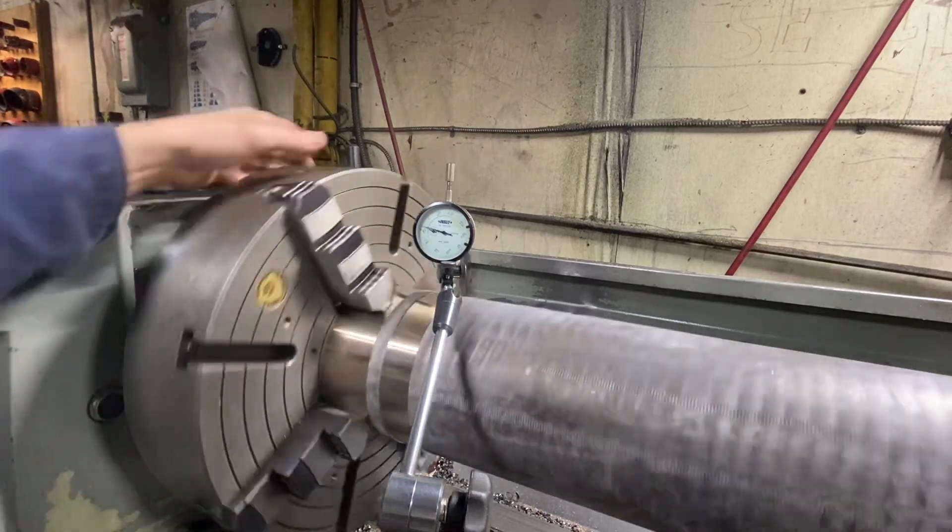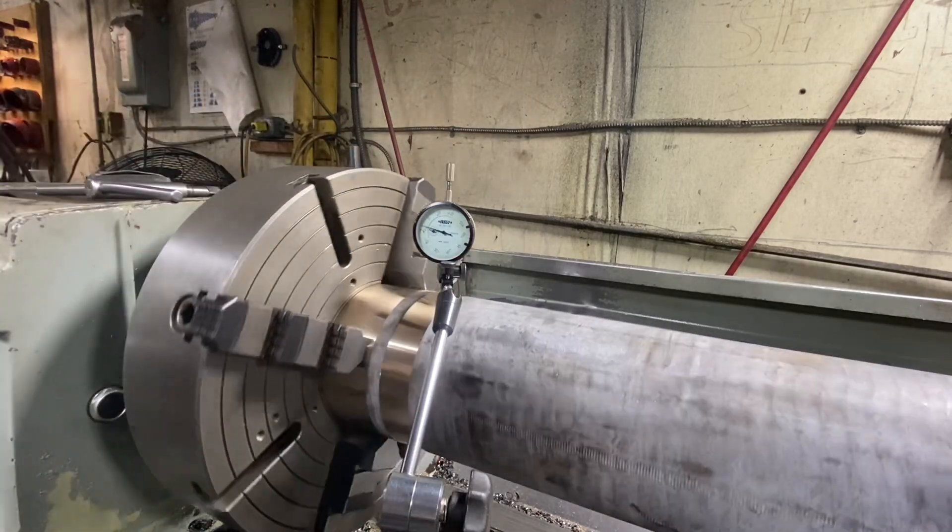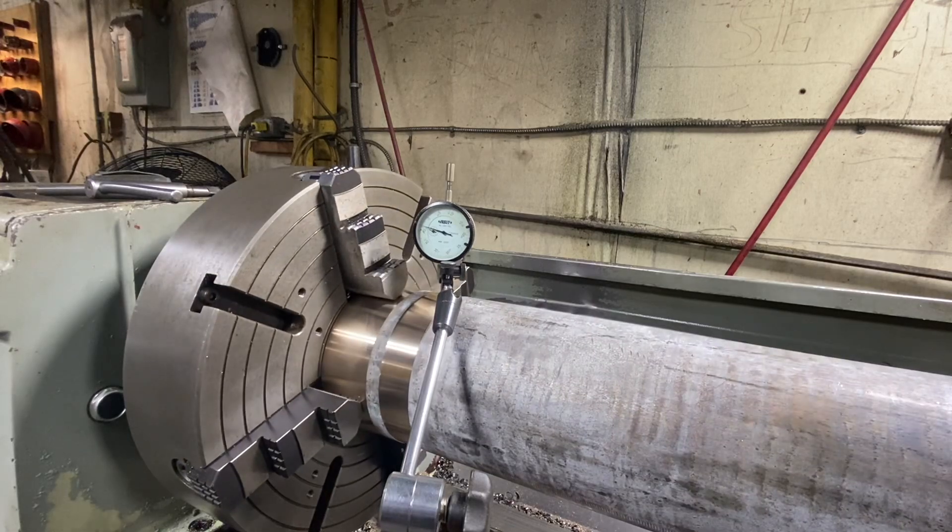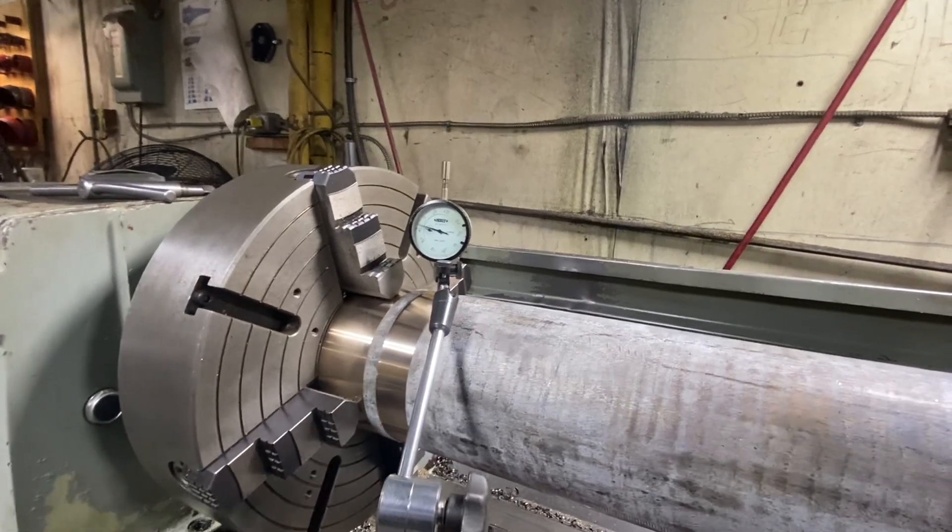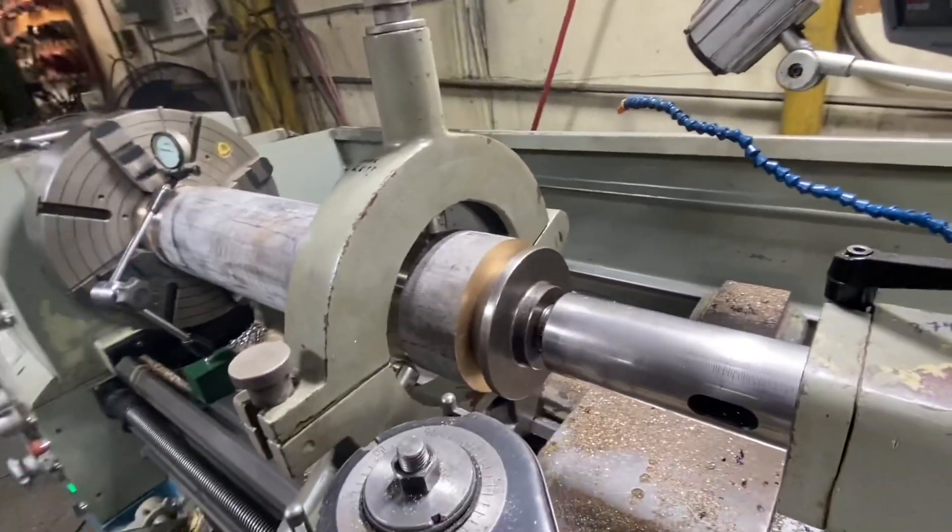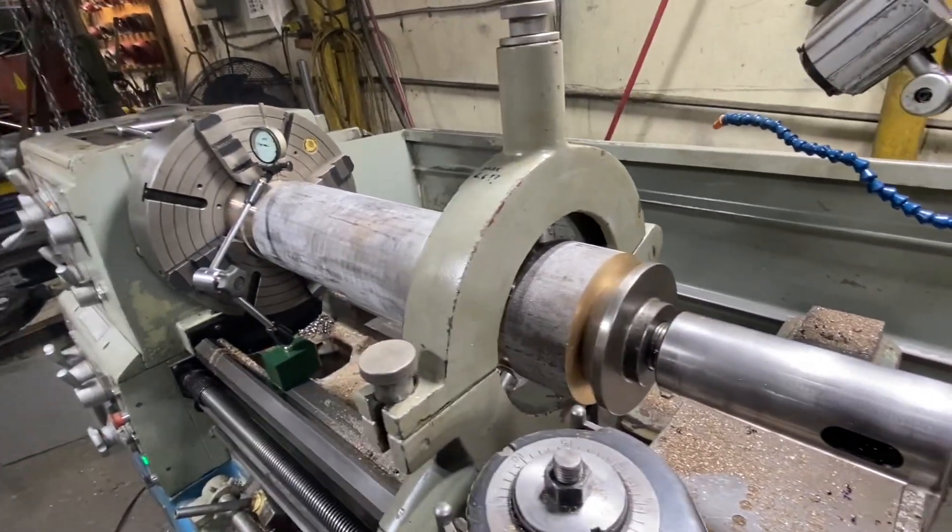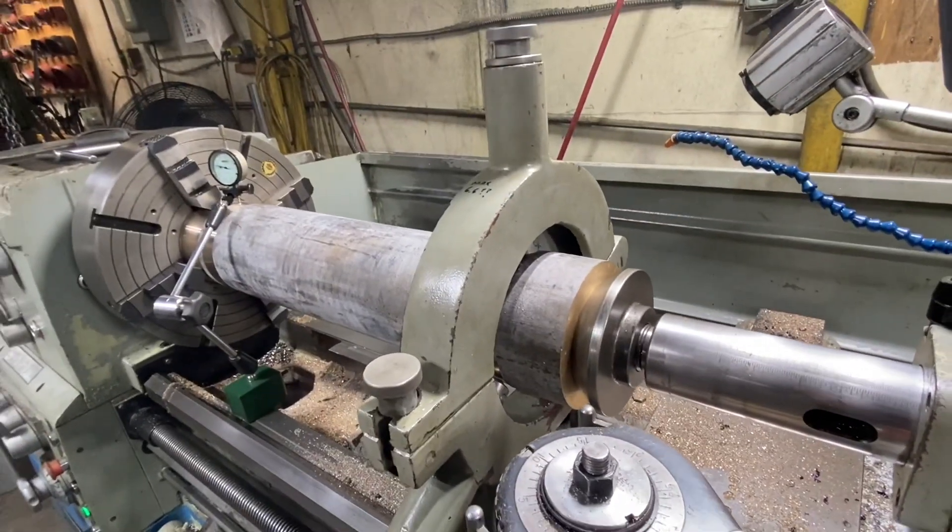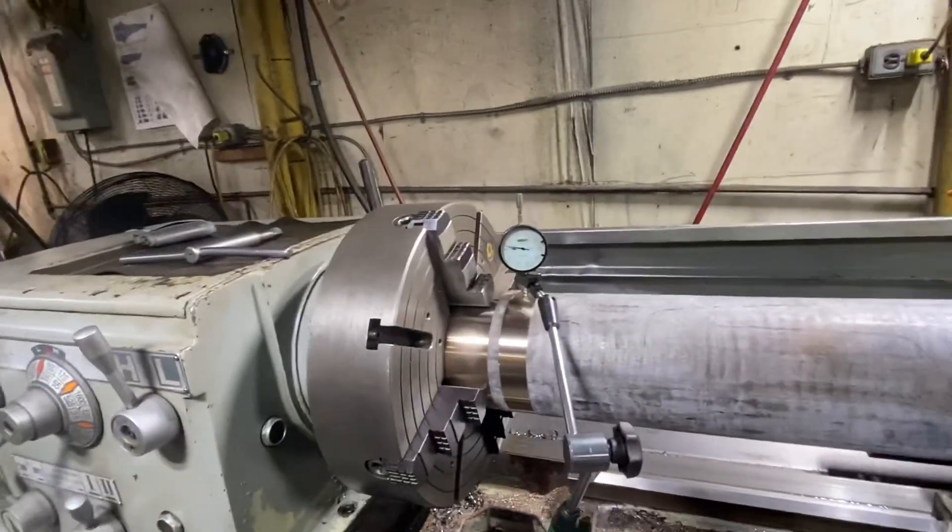And we're still not even running on a turned surface on the other end. We've just got the bell center jammed into the unturned rough end of the tube. And then we're about to set up the steady rest and bore into the tube nice. So that'll probably get rid of that half thou there.